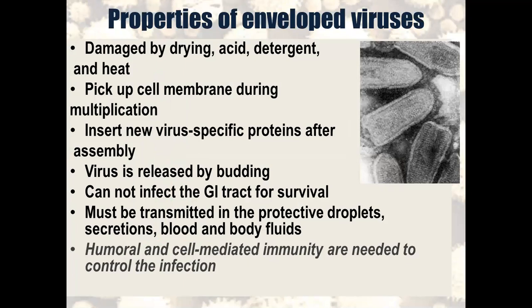Enveloped viruses are not resistant in the environment — they are damaged by drying, acids, detergents, and heating. During maturation they pick up part of the cellular membrane. The envelope contains viral-specific proteins. They are released by budding from the host cell during multiplication. This kind of virus never infects the gastrointestinal tract. For transmission, they need to be protected with biological fluids like blood, mucus, or saliva. The rabies virus is an example — it is transmitted with the saliva of an infected animal through an animal bite. Humoral and cell-mediated immunity are important for control of these viruses.